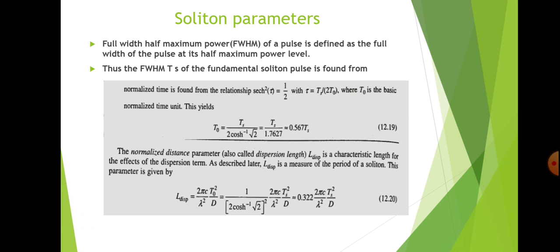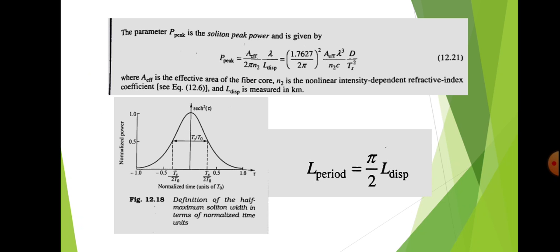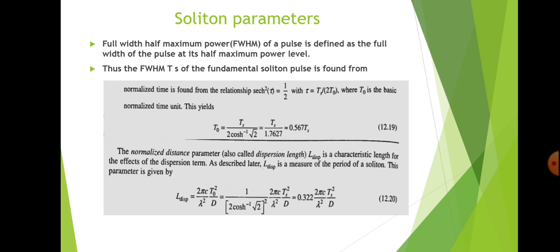Next we look at soliton parameters. The full width half maximum (FWHM) power of a soliton pulse is defined as the full width of the pulse at its half maximum power level. This is shown in the figure with normalized power on the vertical axis, representing the soliton pulse expressed in normalized unity, with the half maximum power duration shown as ts/t0.